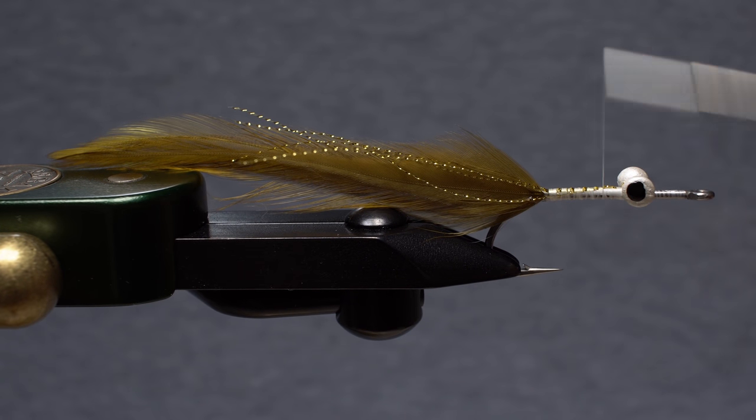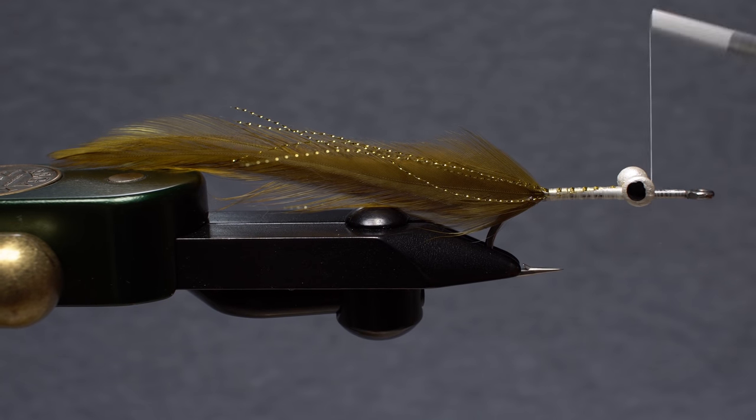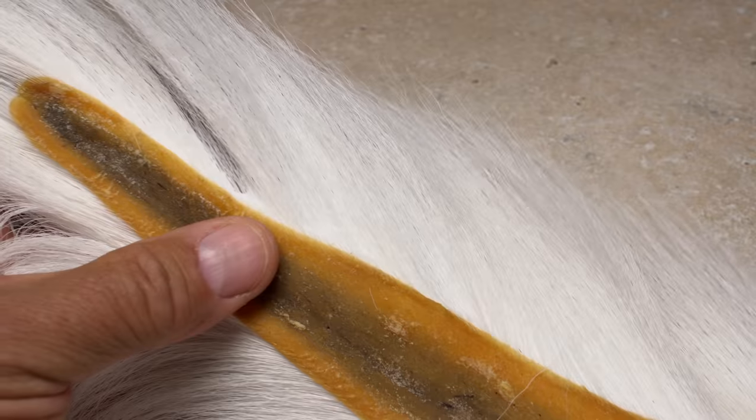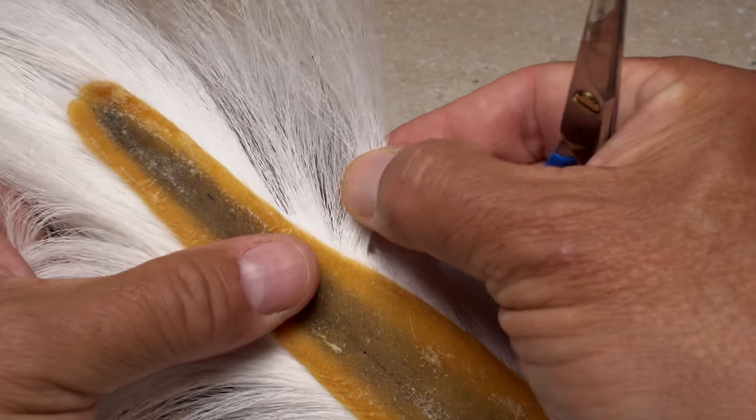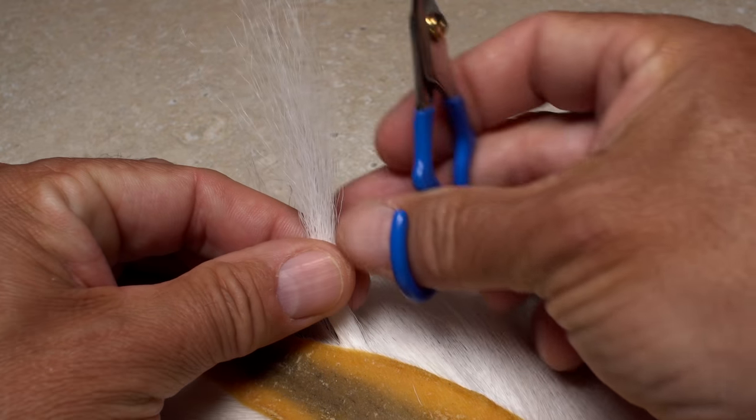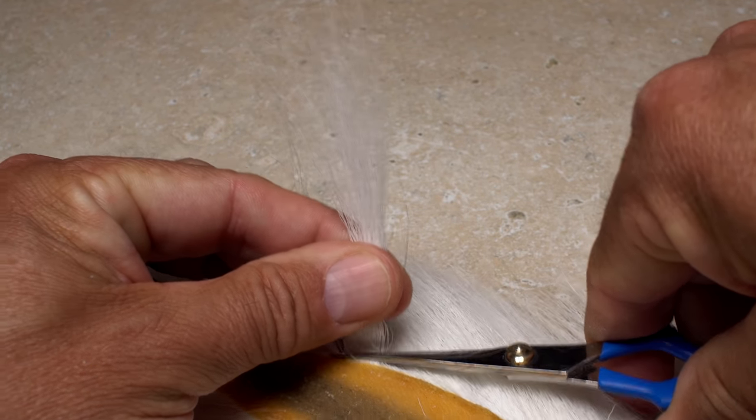Advance your tying thread forward to immediately in front of the dumbbell eyes. Some people will cover the area between the eyes and the base of the tail with diamond braid or a similar material, but I've never really found it to be necessary. Go back to your white bucktail and this time clip a fair sized clump from up near the tip of the tail. I like to keep my half-and-halves very sparse, so snip a relatively small clump.